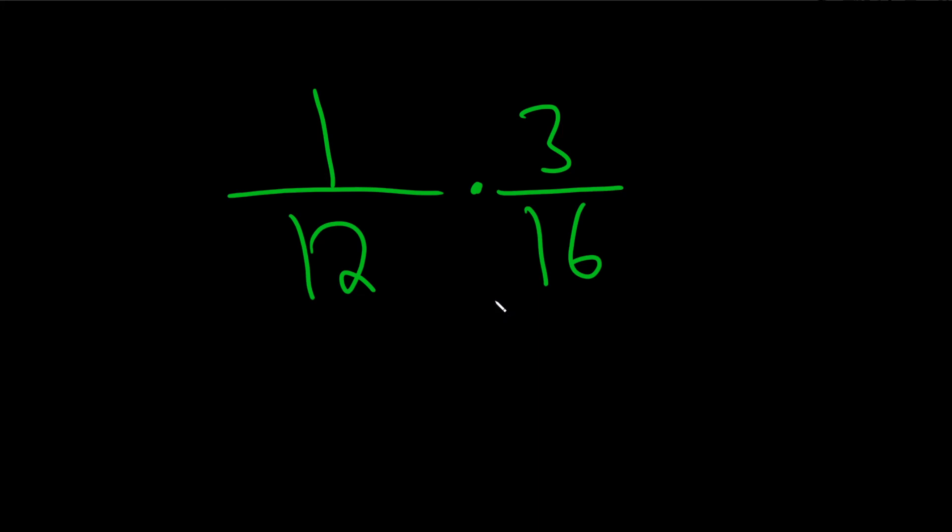So we have two fractions, and we're being asked to multiply them. We can always try to simplify first before we multiply. It's usually a good idea.